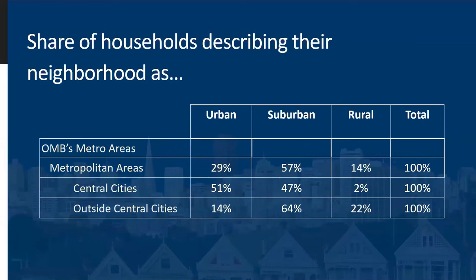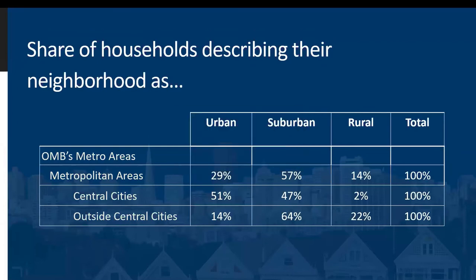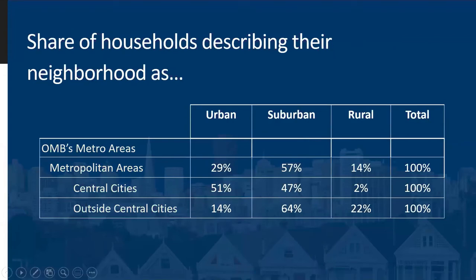The most striking thing about this table is the central cities line — that only 51% of people who live in central cities describe their neighborhood as urban. Often when researchers attempt to compare cities and their suburbs based on existing publicly available data, they rely on this central city versus outside central city distinction as the way of separating urban from suburban. This table shows how much you actually miss by doing that — that nearly half of respondents in central cities perceive their neighborhood to be suburban, and a tiny share would even describe their neighborhood as rural.